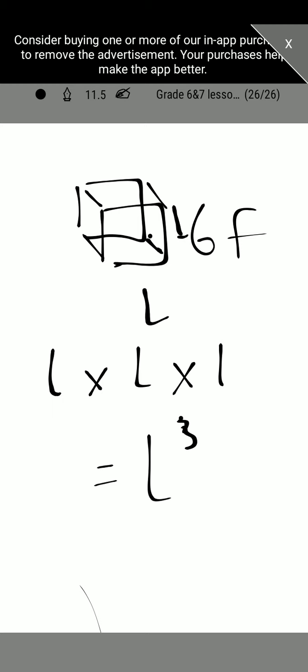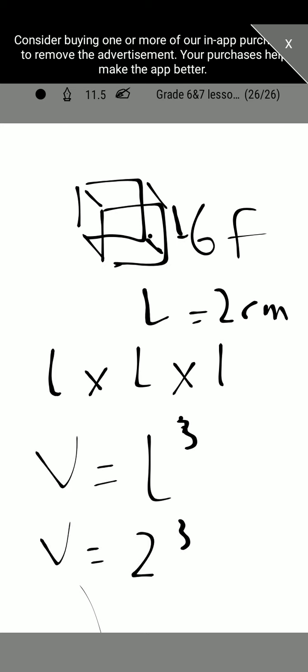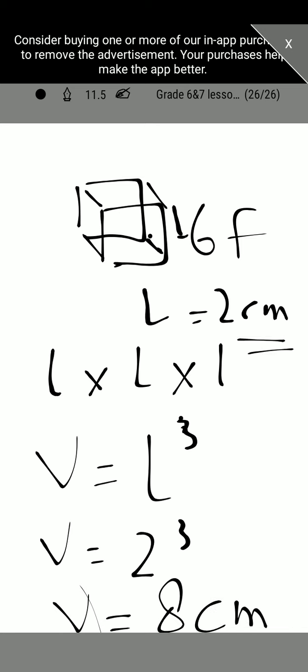For example, if the length of this cube is given as 2 centimeters, you find the volume by calculating 2 cubed. Two cubed is 8, so the answer is 8 cubic centimeters, because 2 times 2 is 4, and 4 times 2 is 8.